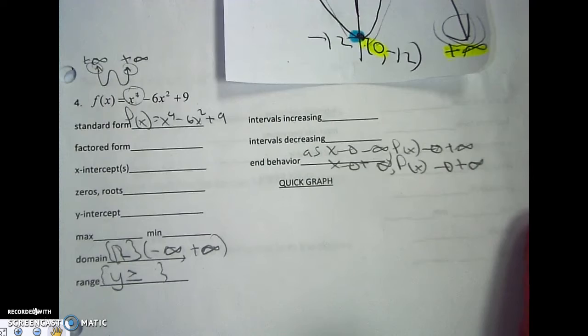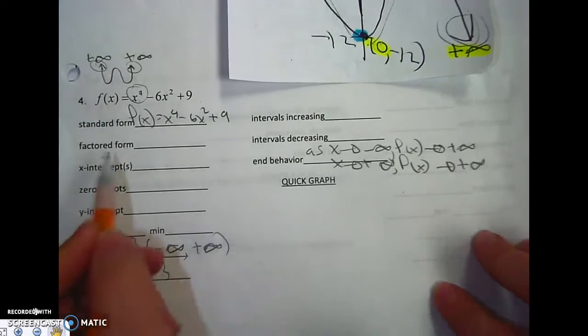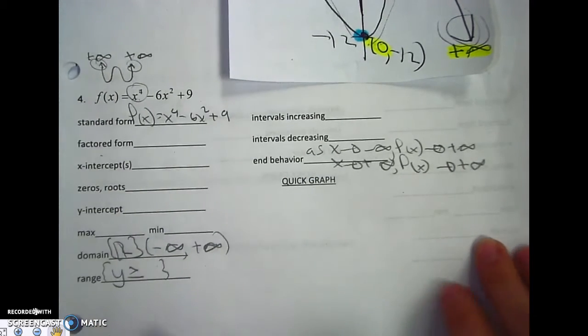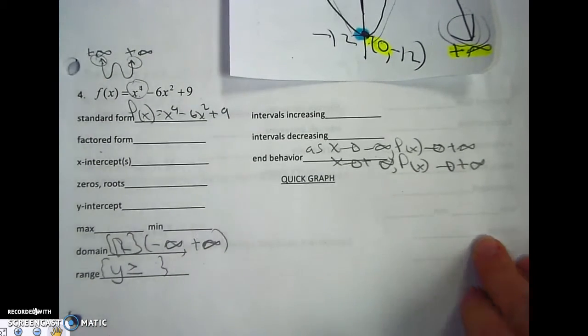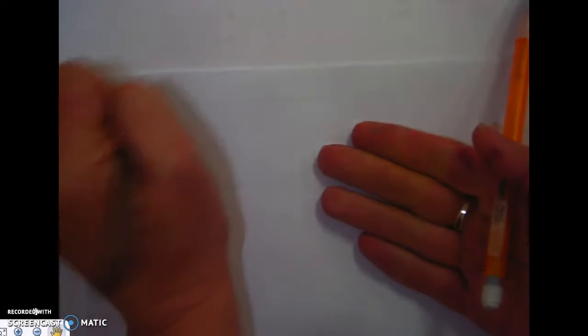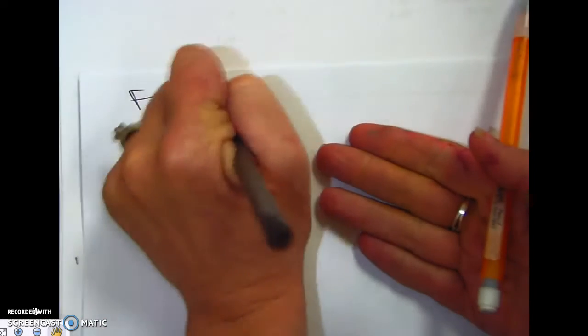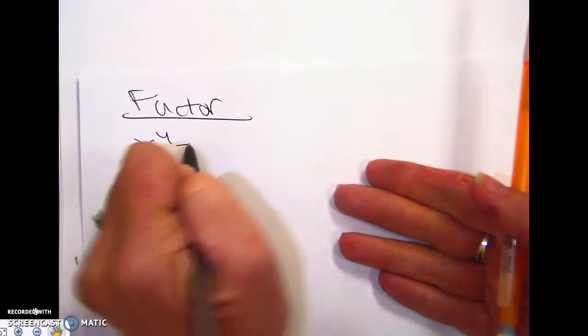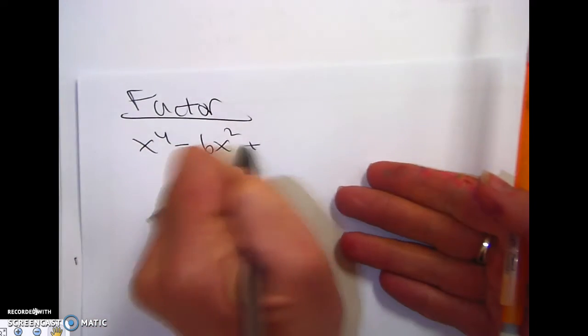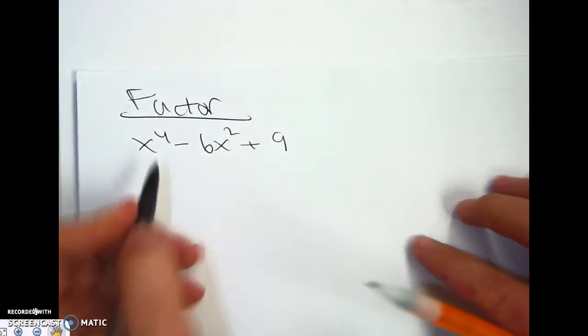So now I need to factor. I have an option, I can either factor it if I know what I'm doing, and I'll show you both. So I'm going to transfer to another page. Let me show you the factor way. If you have x to the fourth minus 6x squared plus 9, I'm going to factor it.